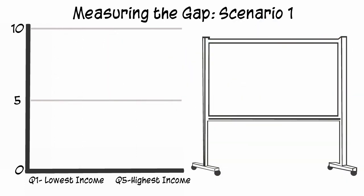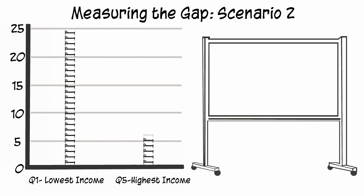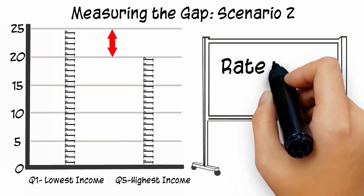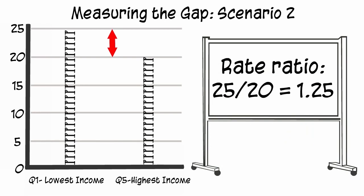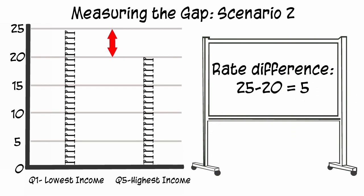Now for illustrative purposes, let's keep the gap in the observed rates the same, but shift all rates up by 15, so that the rate for the lowest income level is now 25 for every 100 people, and for the highest income level, 20 for every 100 people. The rate for the lowest income level is now 1.25 times higher than the rate for the highest level. This relative inequality is much smaller than it was when all of the rates were lower in scenario one. By shifting the rates higher but keeping the gap the same, the relative inequality has decreased. The rate for the lowest income level is still higher by 5 more cases for every 100 people. This absolute inequality is the same as in scenario one, even though the relative inequality has decreased.